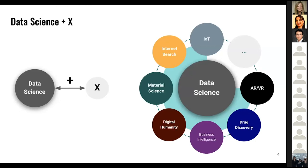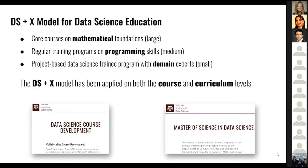If you look at it from a different perspective, data science itself is a core, and it's interacting with different fields like IoT, material science, digital humanity, and quite many others. That's what we call Data Science Plus X, DS plus X. Following this paradigm, we are dividing our curriculum as well as our individual course modules into three corresponding components.